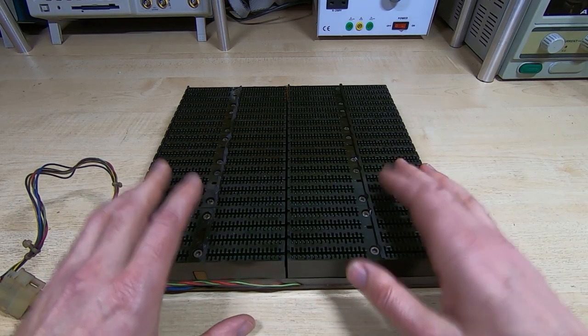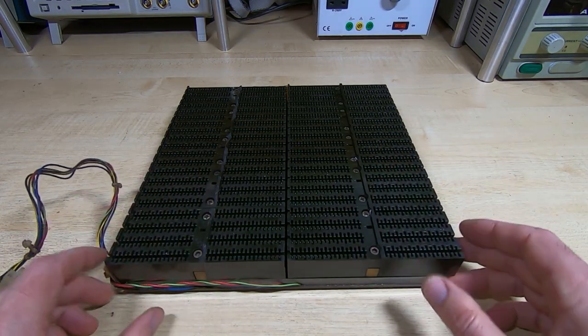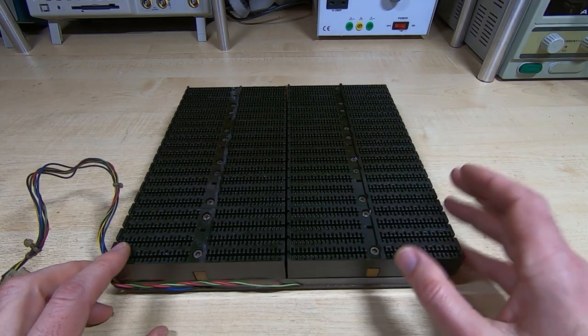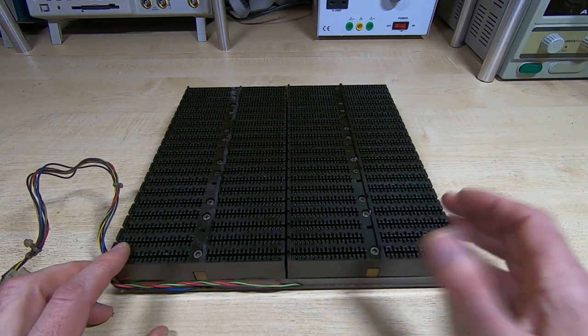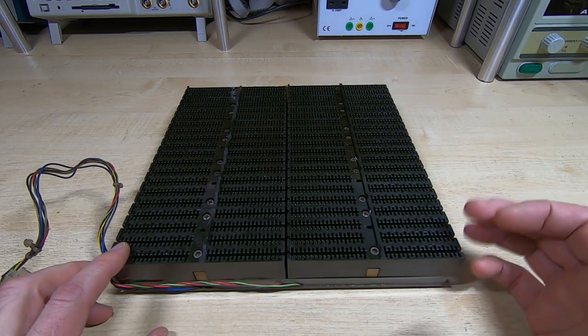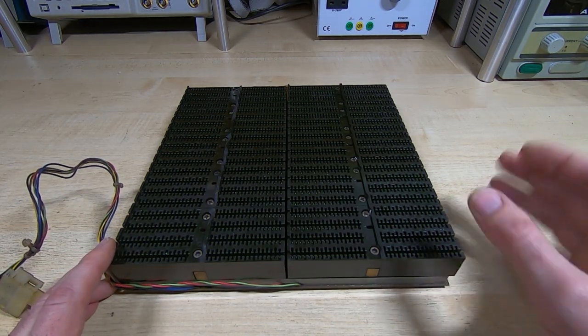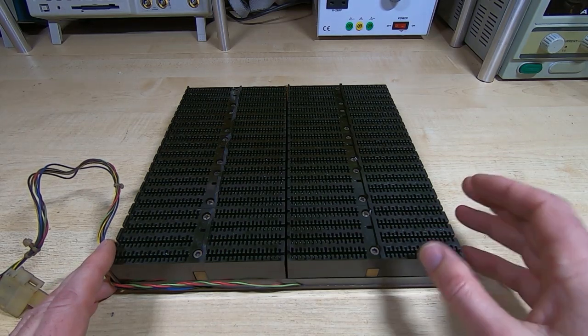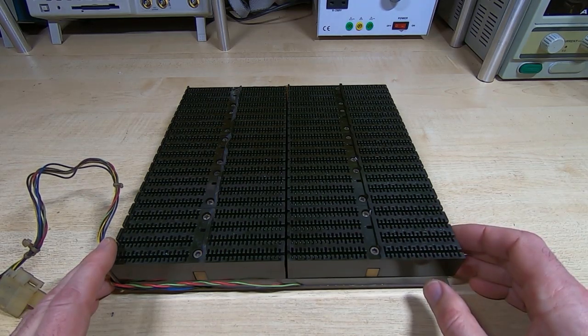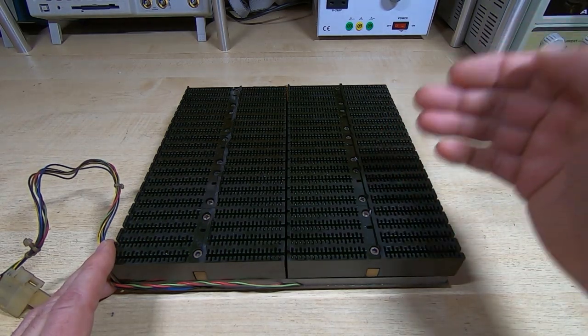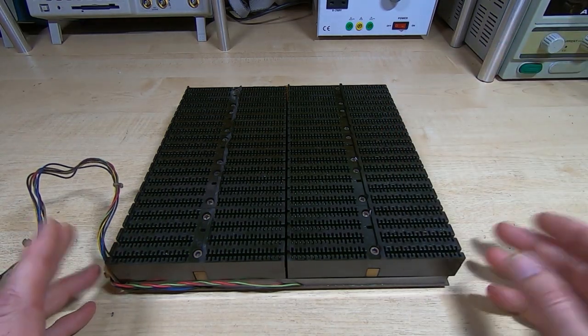So what I've started with is the backplane. I've given it a really good clean. I've got no idea what the contaminant on this was, but it was really difficult to get it off. It's kind of like a brown grime, slime, grease type of material, and it was very difficult to get off. Even with a fairly strong solvent, it took some effort to clean it. I've cleaned all the contacts. I've examined them all under a microscope, and they look fine.